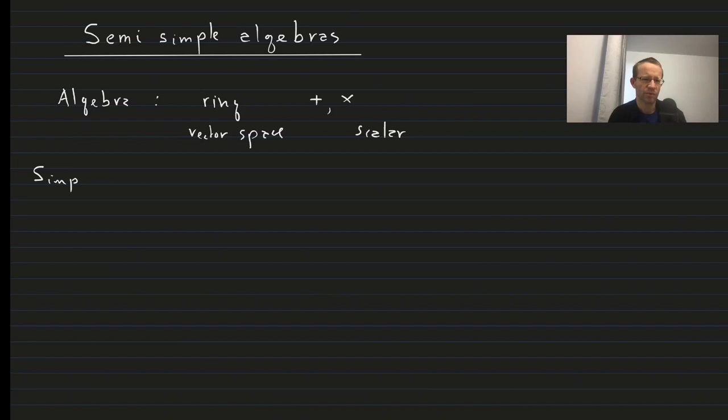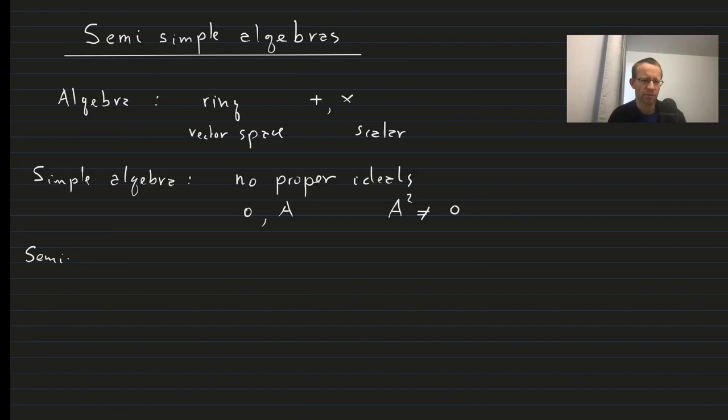So then, what is a simple algebra? It is one that has no proper ideals. So the only ideals are 0 and the algebra itself A, and A squared has to be non-zero. That's a simple algebra. Now a semi-simple algebra we'll define as being associative, Artinian, and having a trivial Jacobson ideal.